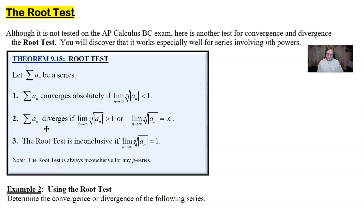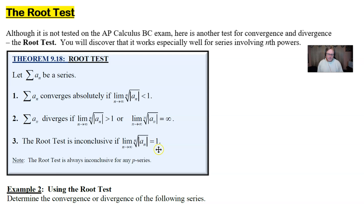Same thing for option two: your summation will diverge if that limit is greater than one, or if that limit is infinity. Now, if you do your limit correctly and get an answer of one, it's disheartening because that means the root test won't tell you anything, and you should check another test. But as I said, it's likely you would have identified that other test first anyway.